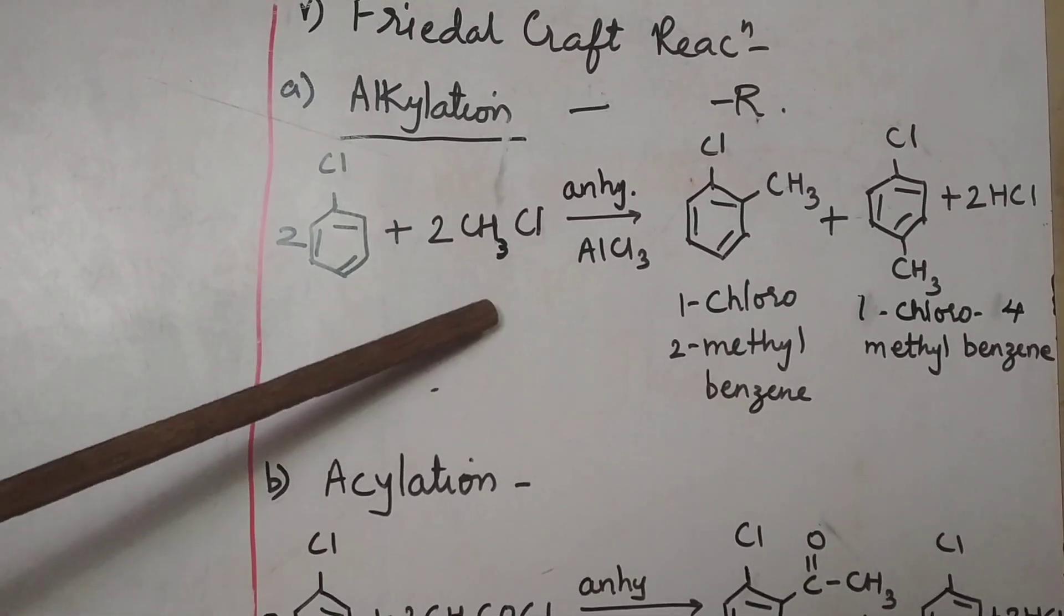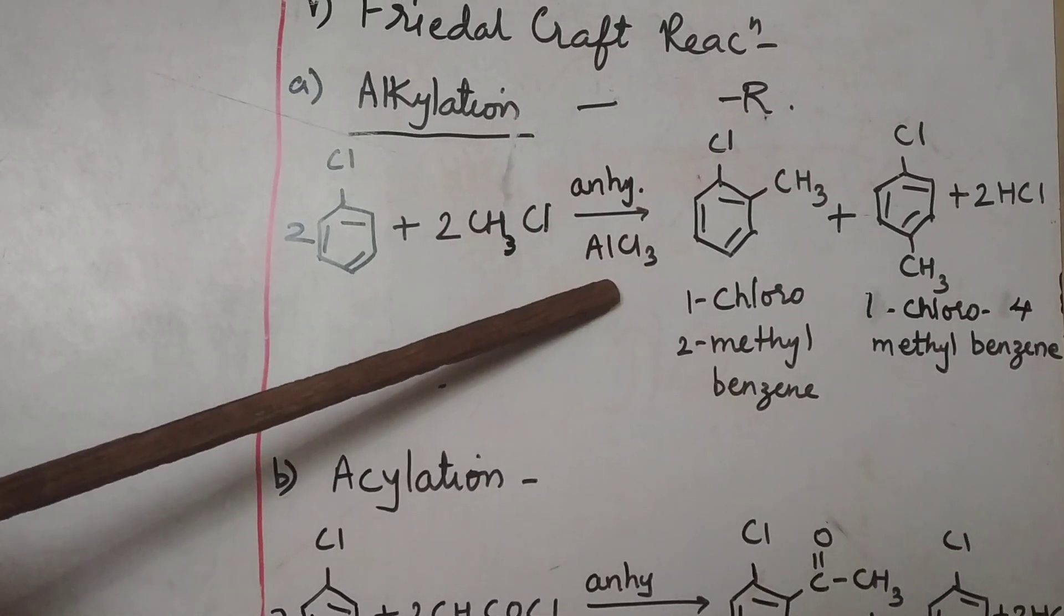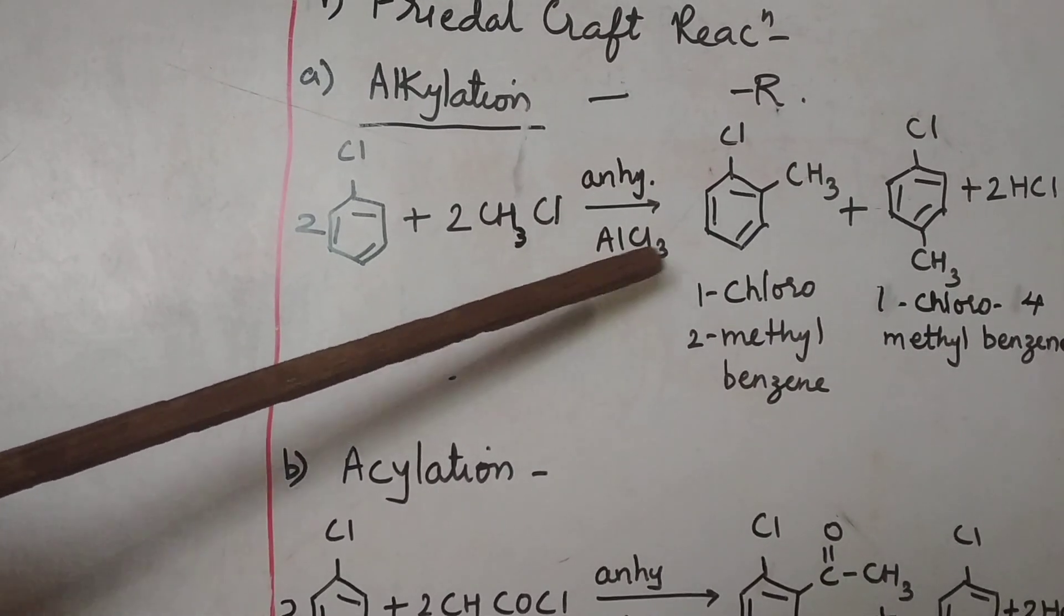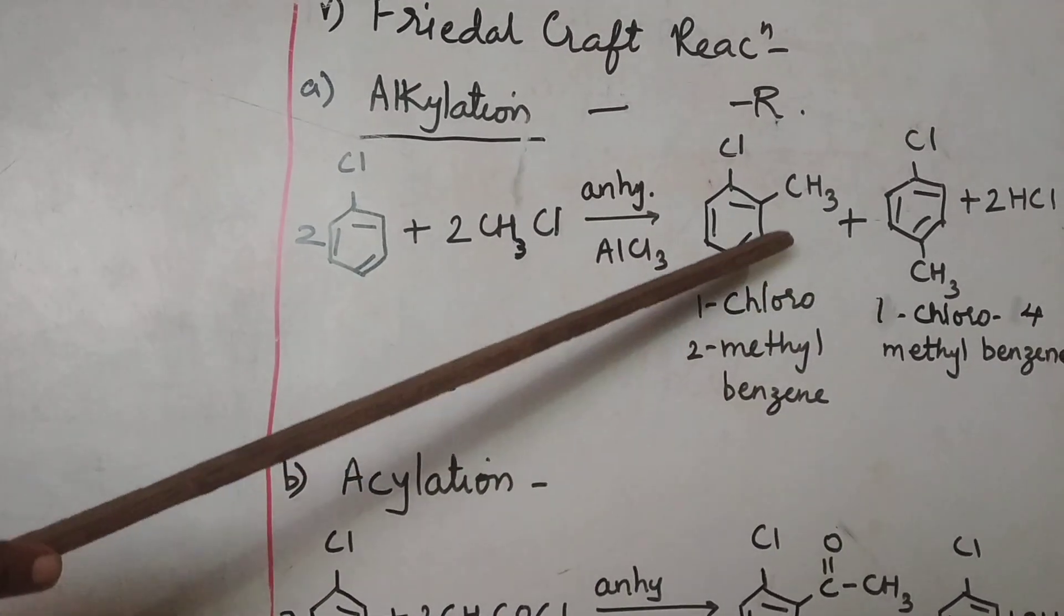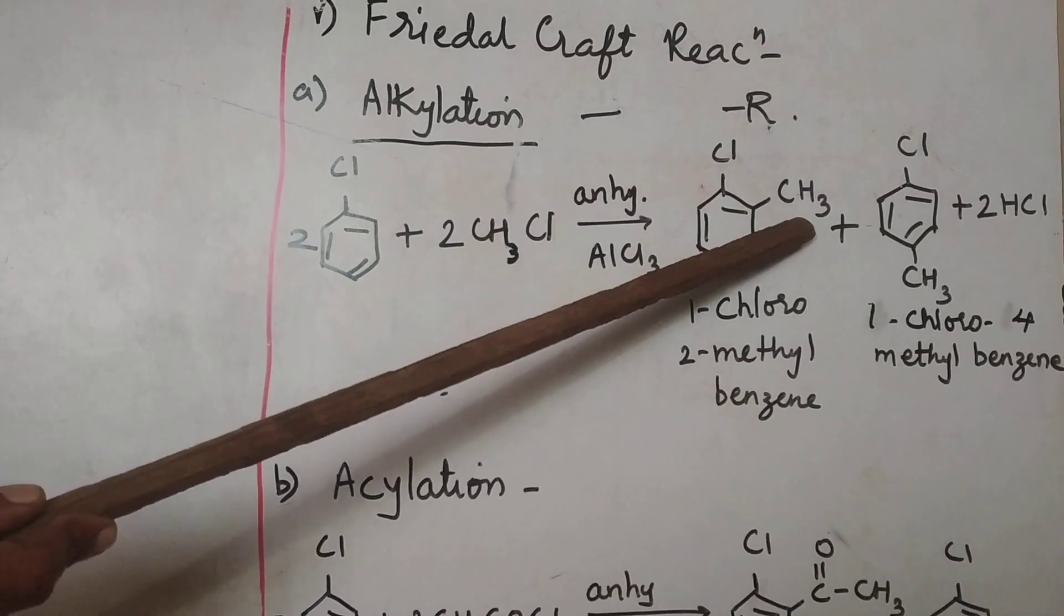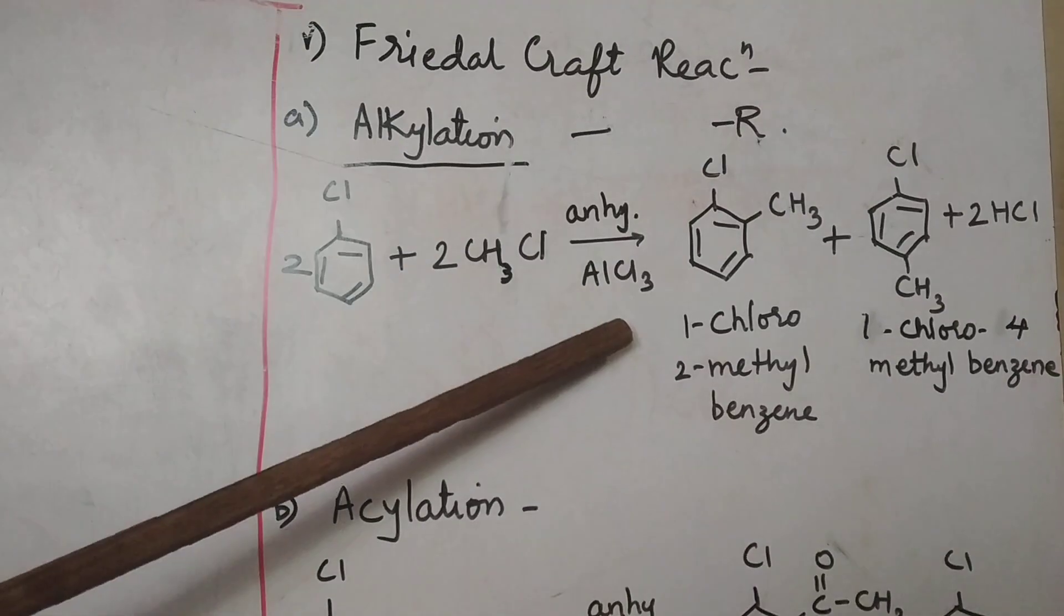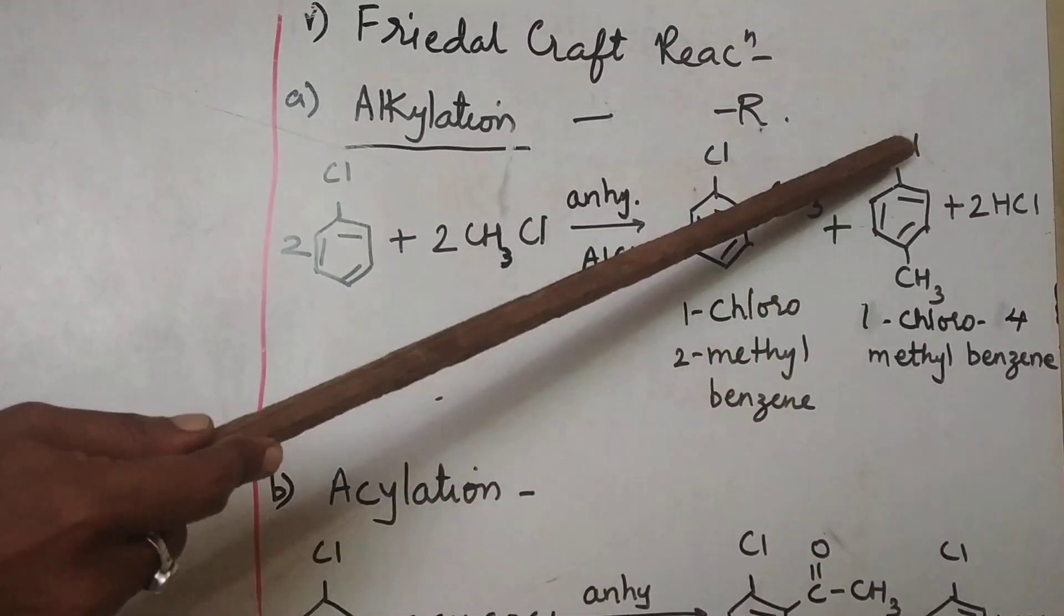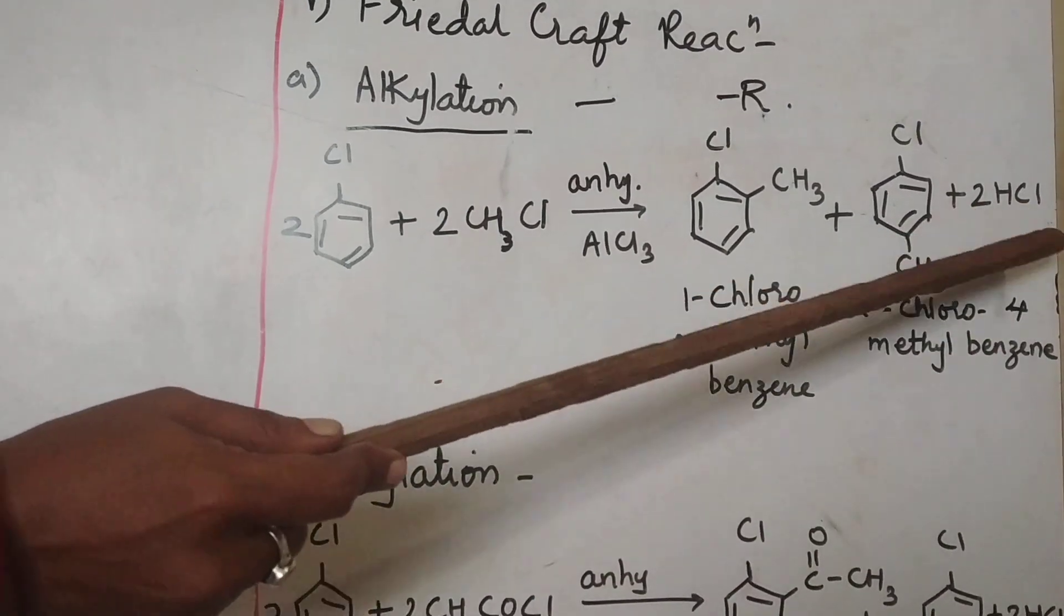So, chlorobenzene when treated with alkyl chloride in presence of anhydrous AlCl3, this is very important catalyst that is used, gives again two products. In one product, you will have substitution at ortho position and in one product you will have substitution of R group at para position. So, the compounds formed are 1-chloro-2-methylbenzene and 1-chloro-4-methylbenzene.